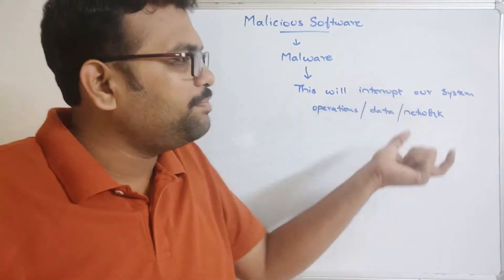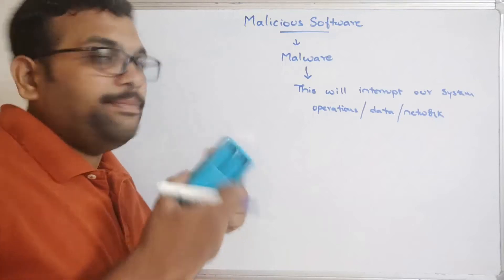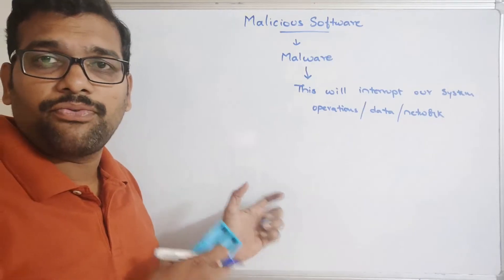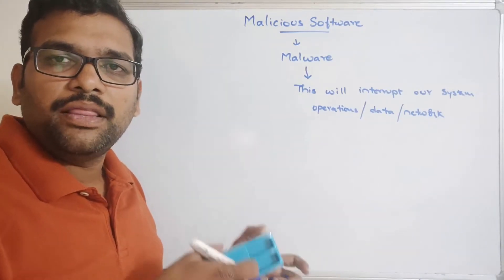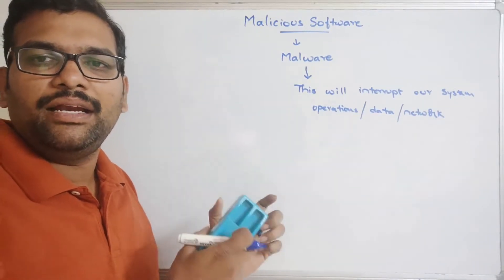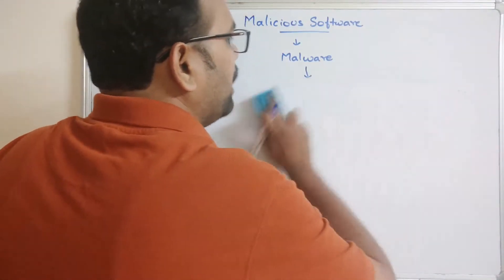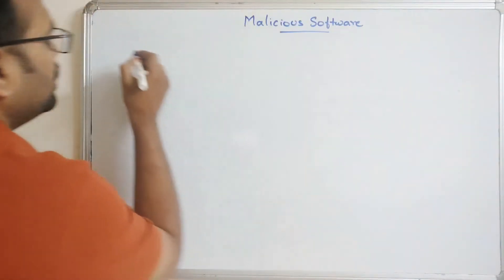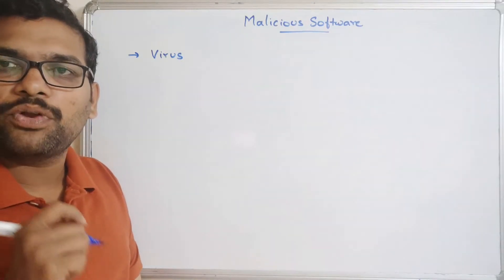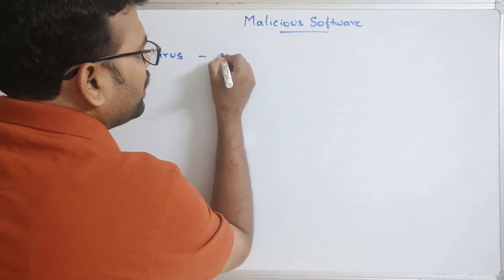Malware is also a program which will disturb the normal operation of a system. Now we'll see the different types of malicious software and how they enter into our system — because unless the software enters the system, the hacker can't gain access. The first type is a virus. All of you are probably aware of the computer virus.